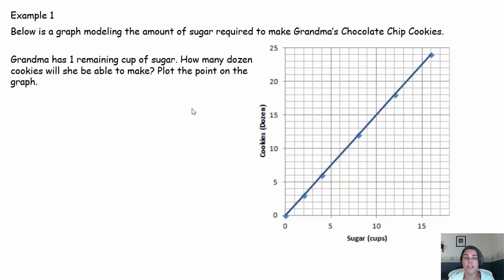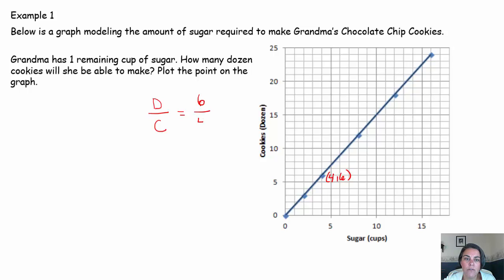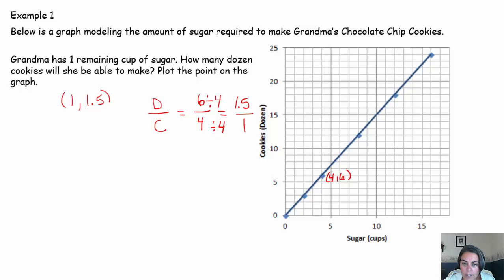Grandma has one remaining cup of sugar — how many dozen cookies will she be able to make? Plot the point on the graph. I'm going to take the point (4, 6) and divide the dependent variable, dozens of cookies, by the independent variable, cups of sugar. Six divided by four is 1.5, so with one cup of sugar remaining, grandma will be able to make 1.5 dozen cookies. We can plot that: one cup of sugar, one and a half dozen cookies.